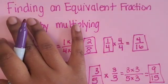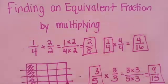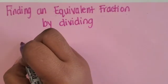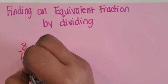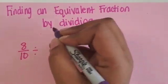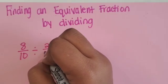So we found equivalent fractions by multiplying. We can also find equivalent fractions by dividing. So if we have the fraction 8/10 and if we divide by a fraction equivalent to 1, so 2/2...